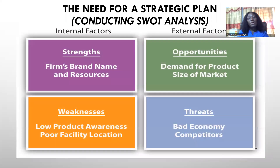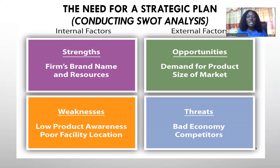In finding out the need for a strategic plan, something very key in management is the SWOT analysis. In conducting the SWOT analysis, we break down the various letters. The S stands for strengths, W for weaknesses, O for opportunities, and T for threats. In looking at your business and trying to come up with a strategic plan, you need to find out what your strengths are.